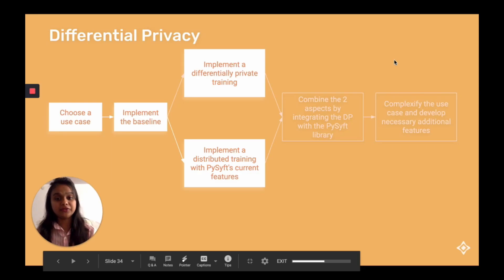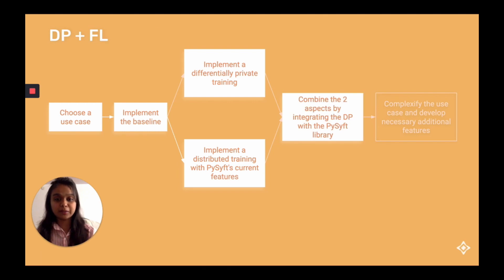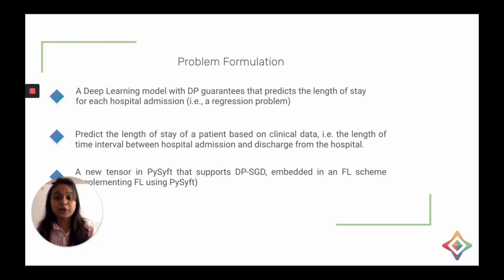Now that we have an idea of federated learning and differential privacy, let's talk about how we can combine these two mechanisms within the existing PySyft library. Our problem formulation has three steps: first, we build a deep learning model with DP guarantees that predicts the length of stay for each hospital admission; next, we apply this model to predict a patient's length of stay based on clinical data; and finally, we add a new tensor in PySyft that supports DP-SGD embedded in a federated learning scheme.